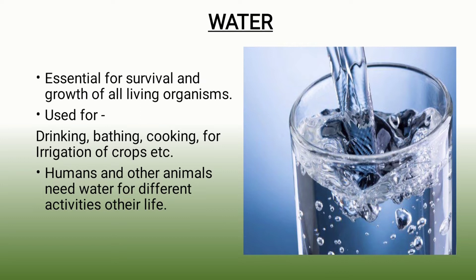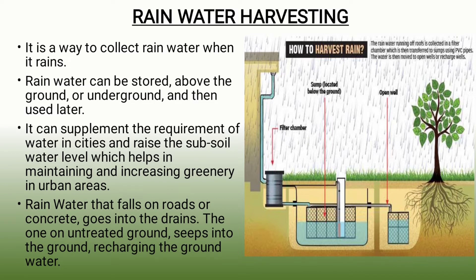Now we have to discuss about rainwater harvesting. We know that rain is the purest form of water, but when it touches the ground, it becomes impure because it dissolves many harmful things. So rainwater should be collected through rainwater harvesting. It is collected in both rural and urban areas through tanks. The tank above the ground is known as an overhead tank, and the tank under the soil is an underground tank.